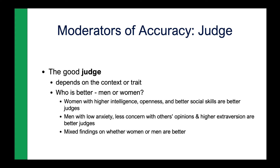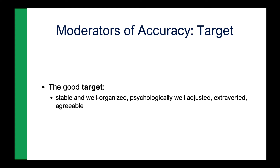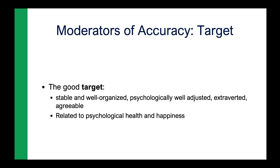The next variable is the target — the person whose personality is being judged. In general, mentally healthy targets — psychologically well-adjusted and well-organized — and targets that are more extroverted and agreeable are easier to judge. To the extent a person is mentally healthy, stable, sociable, and agreeable, that person is easier to judge than someone who is more introverted, lower in agreeableness, or has mental health issues that might make their behavior more erratic. Ease of judging a target is really related to how psychologically healthy they are and their level of subjective well-being.